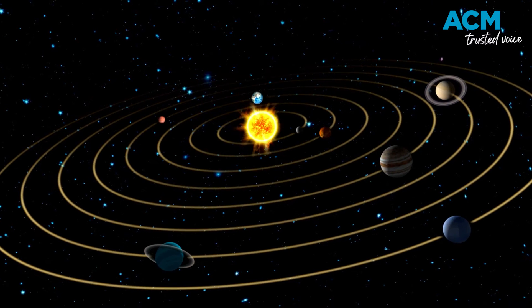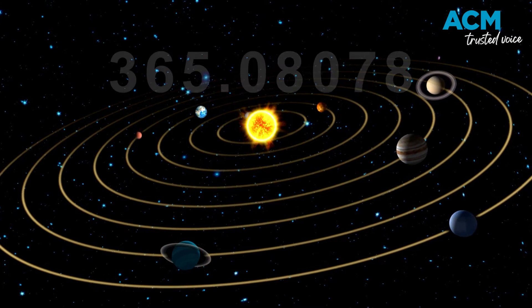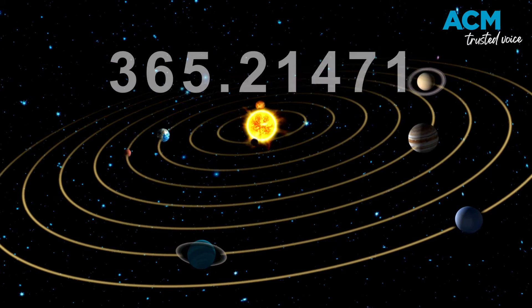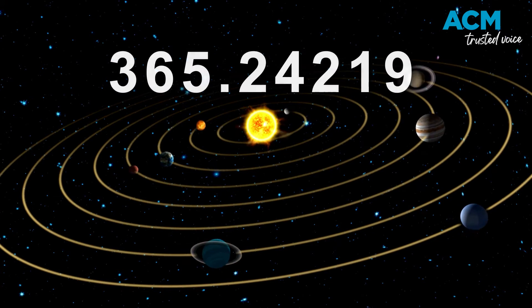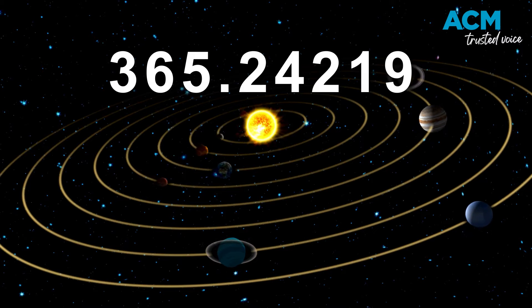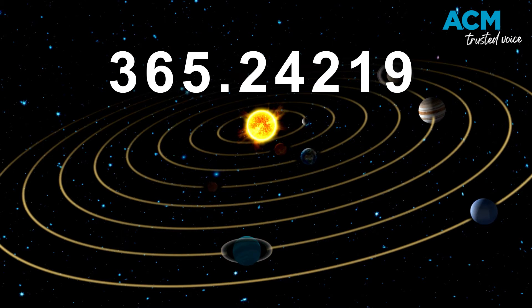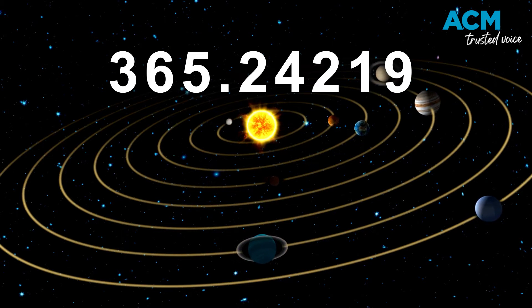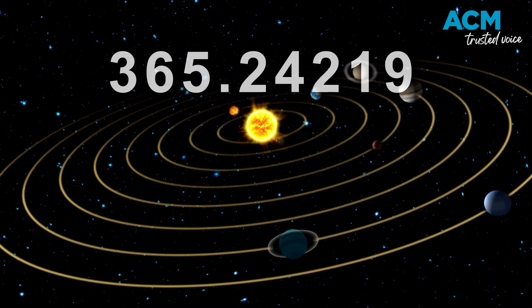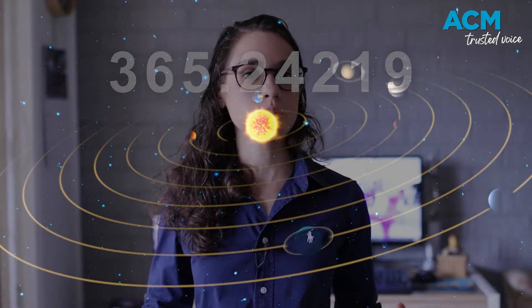But it actually takes Earth 365.24219 days. Annoyingly, that's around a quarter of a day, or 5.8 hours longer than our calendar years.